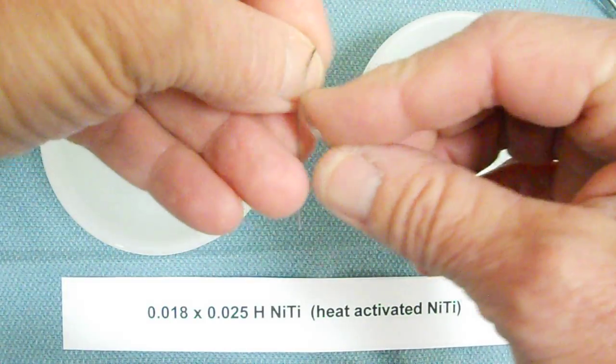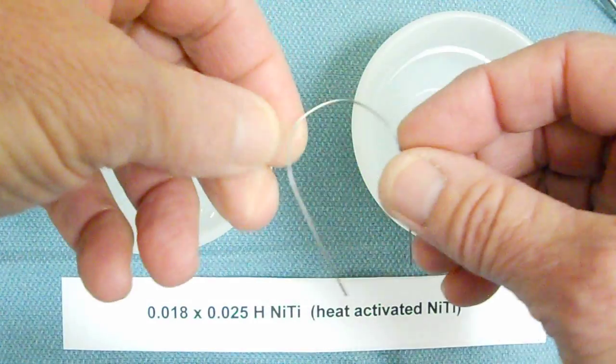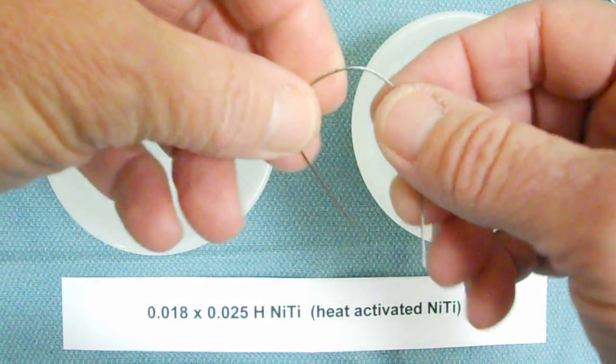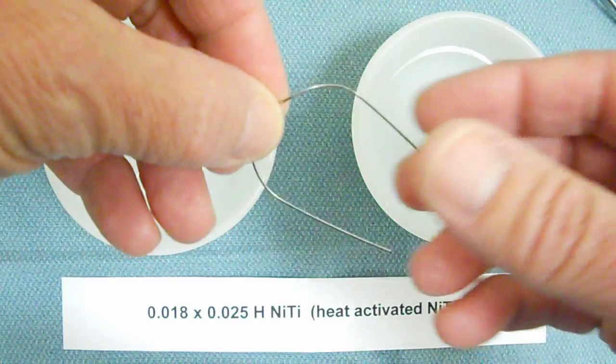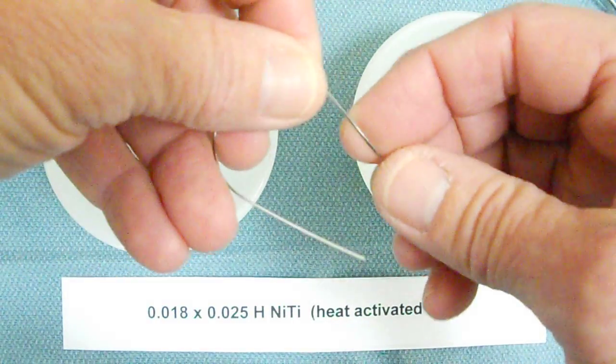When you take it out of the package, it feels kind of like a dead soft wire in that you can bend it, which is different than the NiTi that we just looked at in the round NiTi versions.